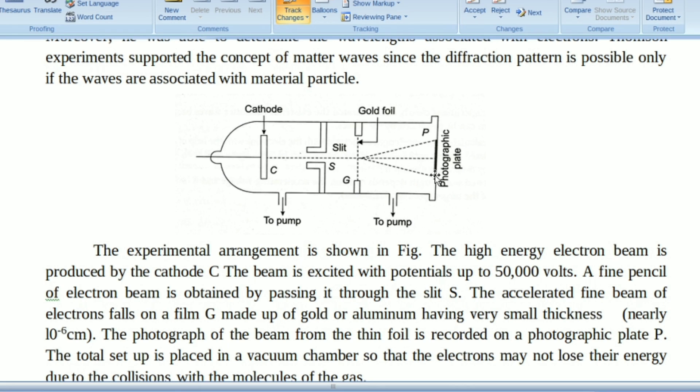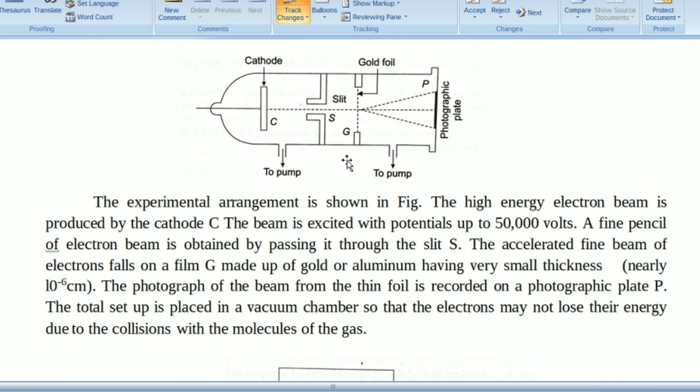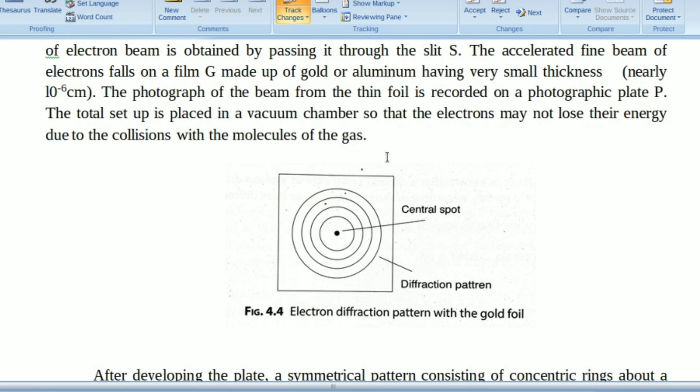The paths are recorded on the photographic plate. The entire system is enclosed in a vacuum chamber. After developing the photographic plate, we get a central spot and this diffraction pattern, also called fringes.